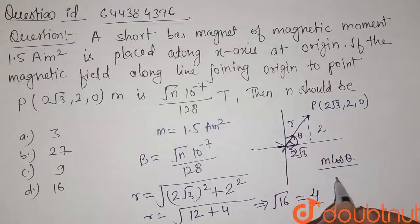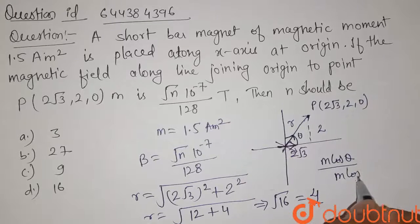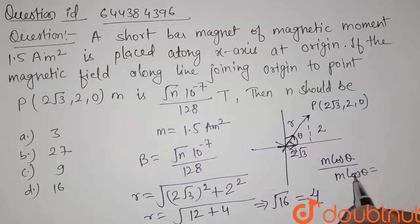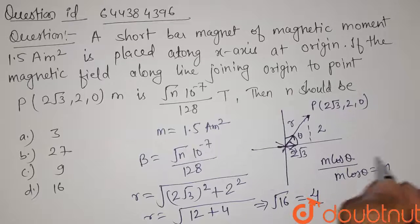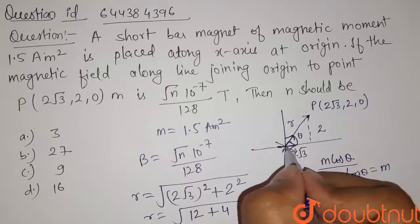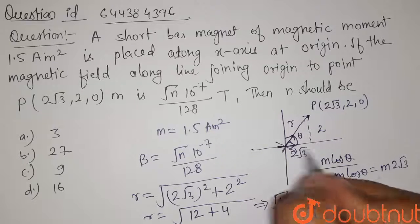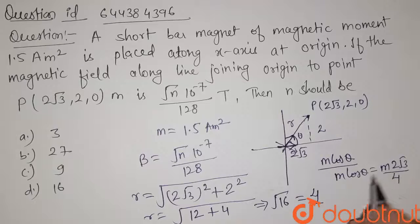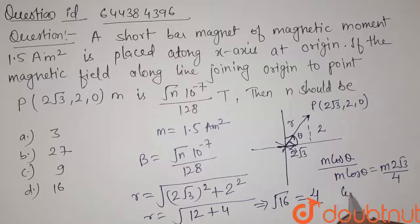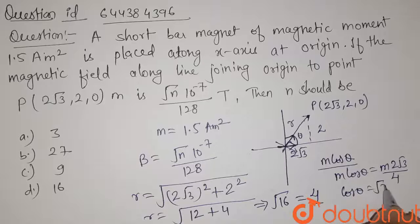So this length is equals to 4, then m cos θ will be equals to m into cos θ will be equals to base, that is 2√3 divided by hypotenuse, so it is 4 here. So the value of cos θ is equal to √3 by 2.